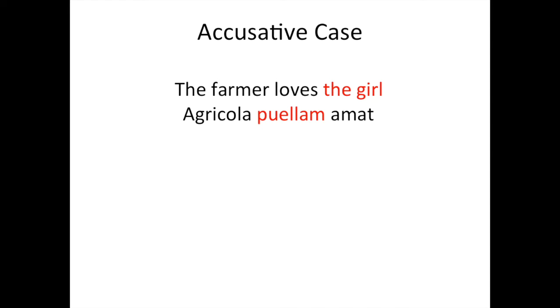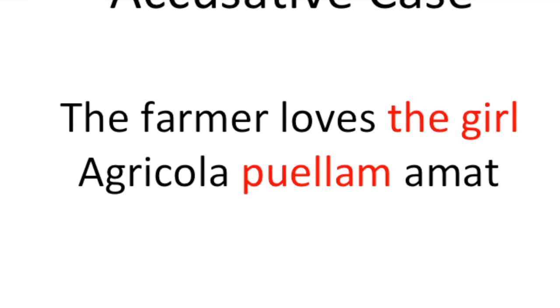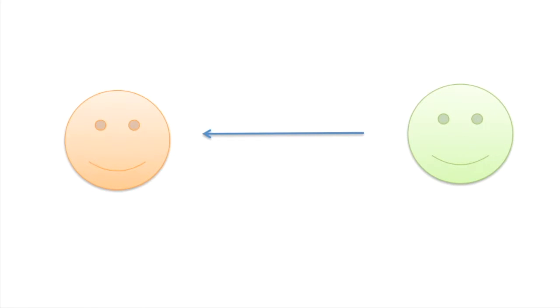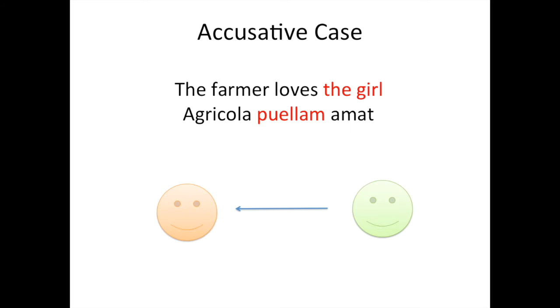The accusative case, which we also talked about earlier — another example: 'The farmer loves the girl,' or 'agricola puellam amat.' In this case, the girl is being loved by the farmer, and therefore 'puellam' is in the accusative case. This is the direct object we were talking about earlier.